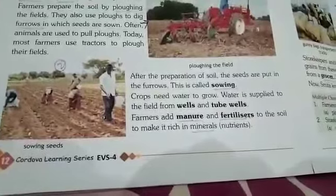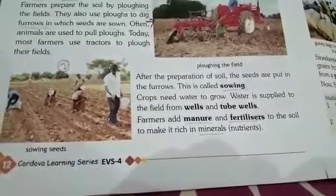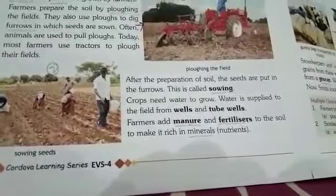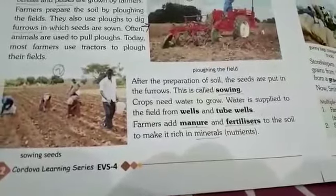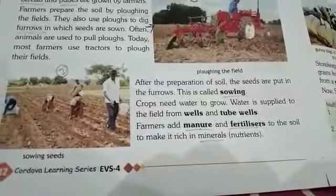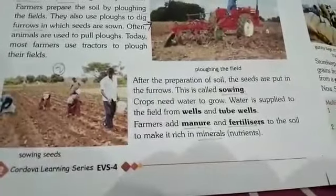After sowing the seeds, they need water to grow. Water is supplied to the field by wells or tube wells. Then we add manure — we call it khad — and fertilizers to the soil to make the soil rich in minerals.